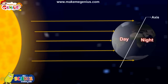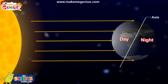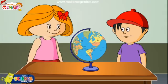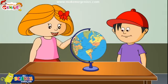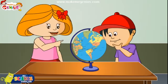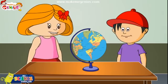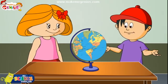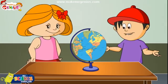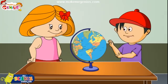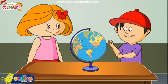When the earth rotates, day changes to night and night changes to day. So the rotation of the earth causes day and night. If you look at the globe, you will notice that India and United States are on the opposite sides. So when it's day in the United States, it's night in India, and when it's night in the United States, it's day in India.